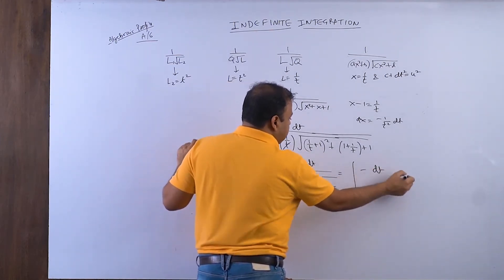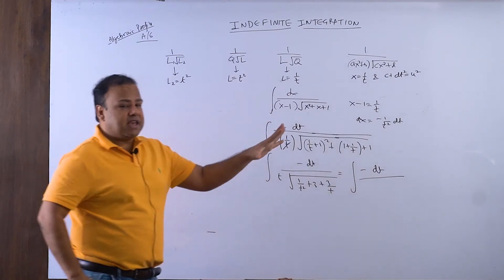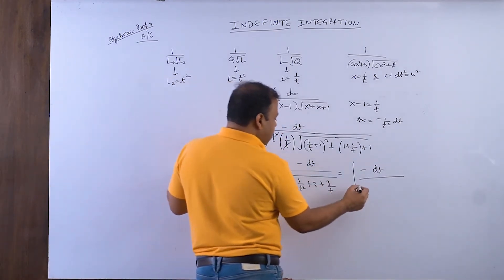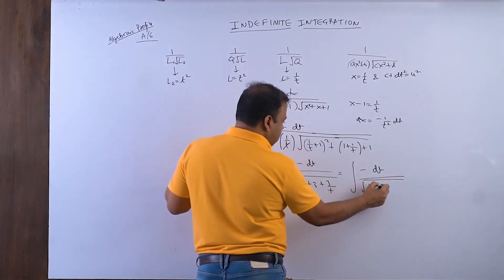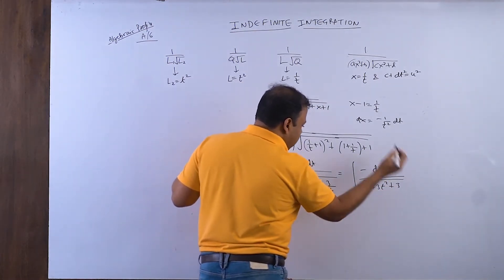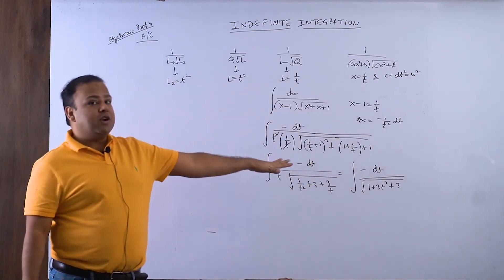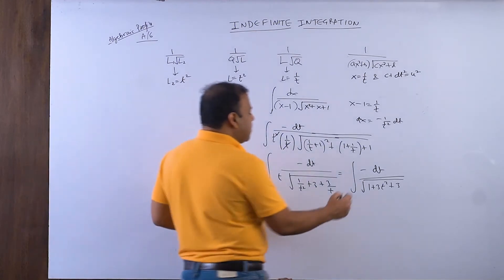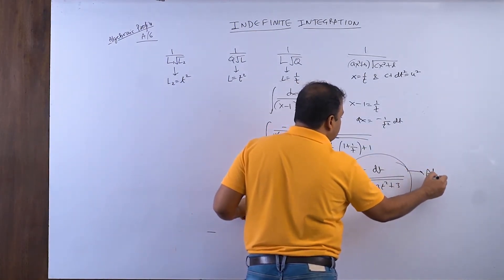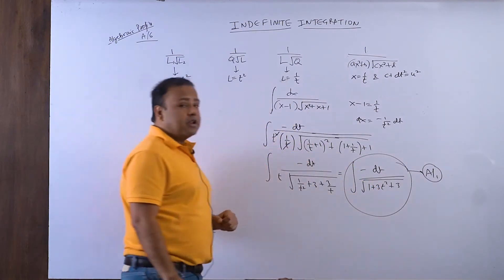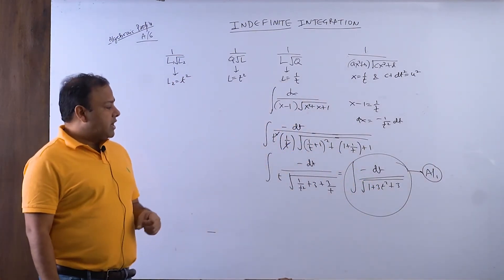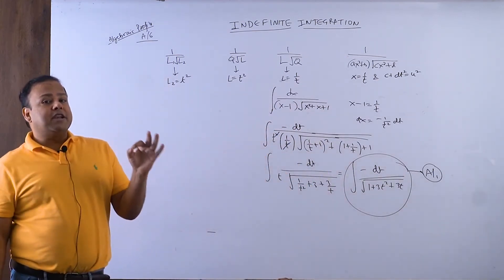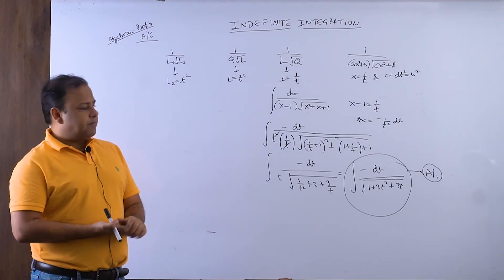Multiplying through by t² inside the root, the expression becomes 1 + 3t² + 3. This is now a profile A1 type — 1 over a quadratic. We complete the square: factor out 3, and the expression inside is t² + t + 1/3. Taking half the coefficient of t gives 1/2, squaring gives 1/4. So it becomes 3·[(t + 1/2)² + 1/12].